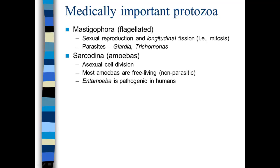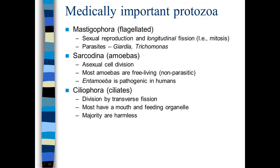Amoebas divide asexually just through a type of fission. Most are free-living — pond water amoebas like Amoeba proteus are not parasitic — but Entamoeba is a genus that is pathogenic to humans. The one most often heard of is Entamoeba histolytica, which infects the intestines and can cause intestinal blockage, damage, and inflammation. Ciliates are called Ciliophora. The majority of ciliates are harmless; most have a mouth and a feeding organelle, so they do have a rudimentary structure.